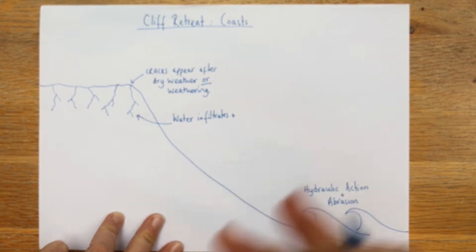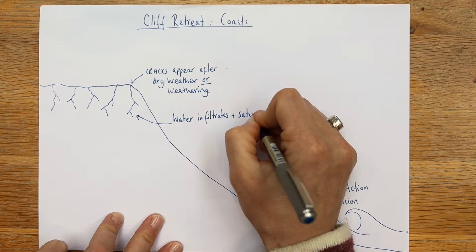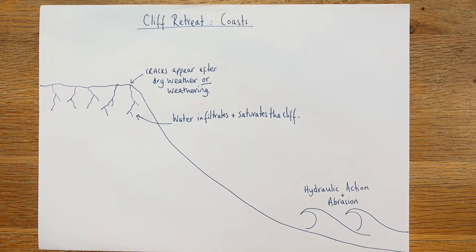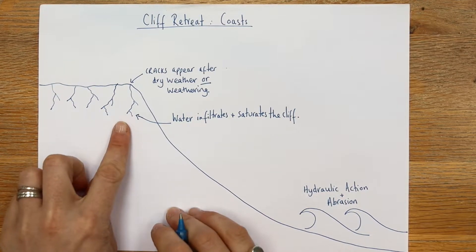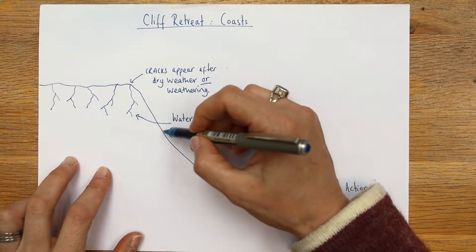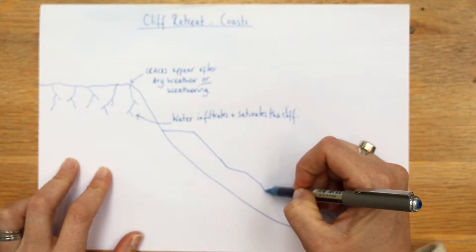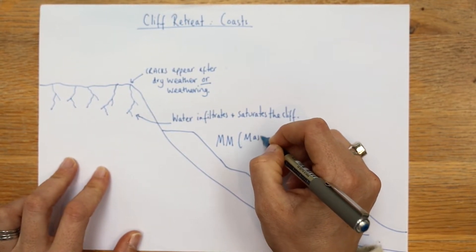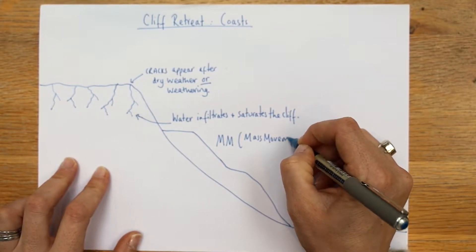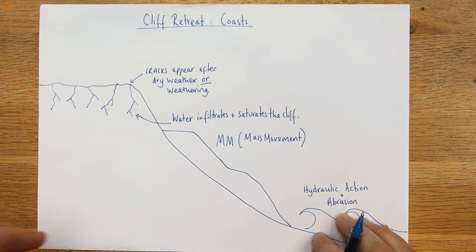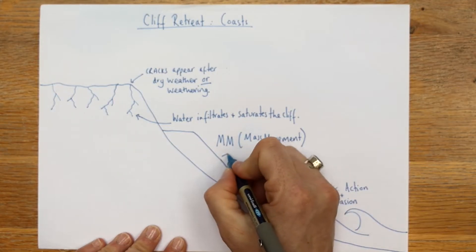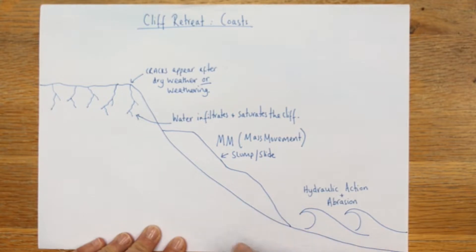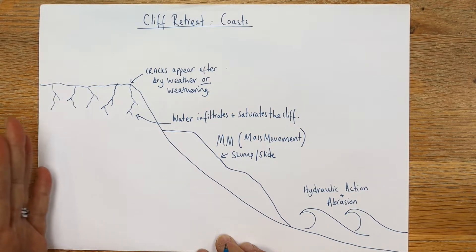Basically the water saturates the cliff, meaning it makes it heavy. We don't really want a heavy cliff because that's going to cause mass movement. So we've got mass movement, which is a type of falling from the cliff — things like slumping, rock falls, and mud flows. Mass movement is a slump or a slide of material down the cliff face, and this keeps happening and eventually the cliff will keep retreating.